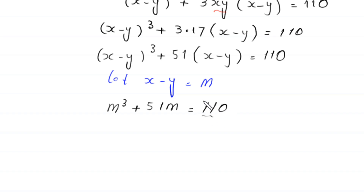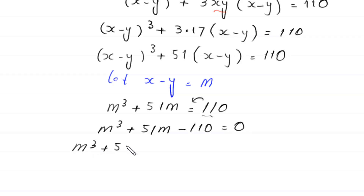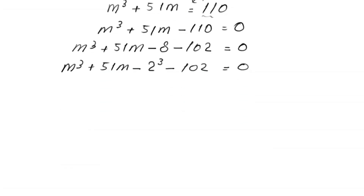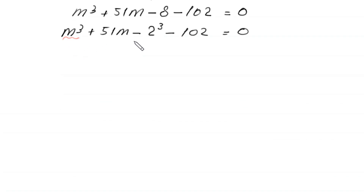Moving 110 to the left-hand side: m³ + 51m − 110 = 0. We note that 110 can be split as 8 + 102, and we group m³ − 8 and 51m − 102.